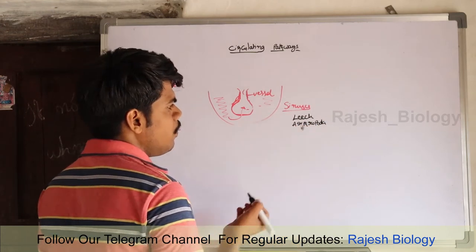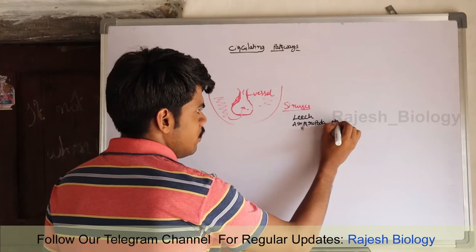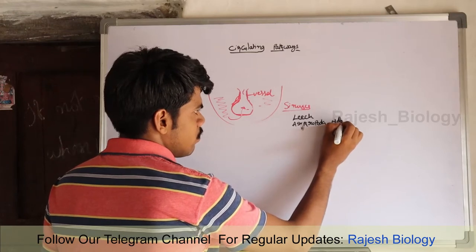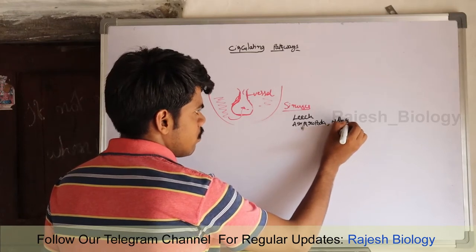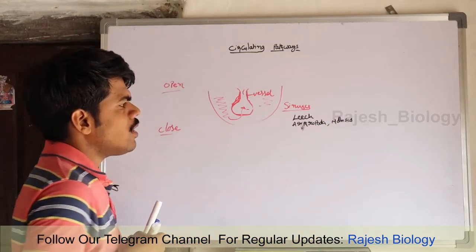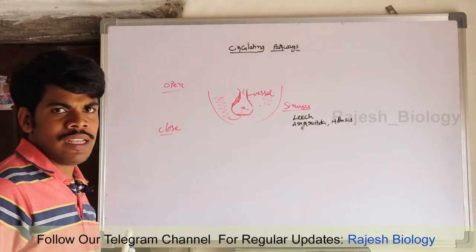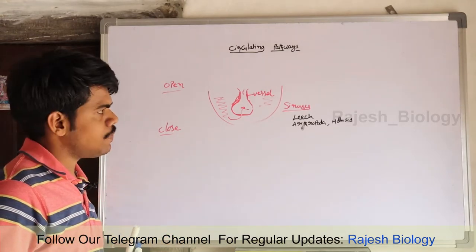Arthropoda and Mollusca are some examples for open type of circulatory system.